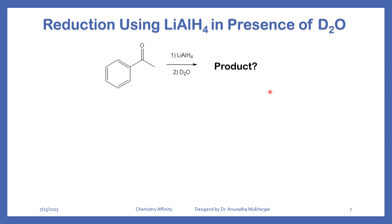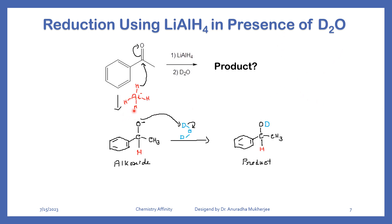What happens when lithium aluminum hydride reduction takes place in the presence of D2O? The first step is nucleophilic addition where the hydride anion attacks the carbonyl carbon. In the final step, instead of water we use heavy water, so O minus abstracts deuterium from the heavy water and deuterium makes a bond with the oxygen. This is the product we will be getting.